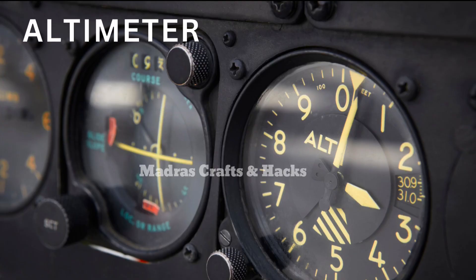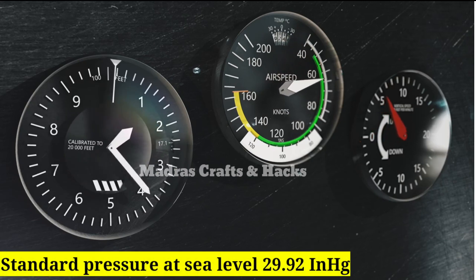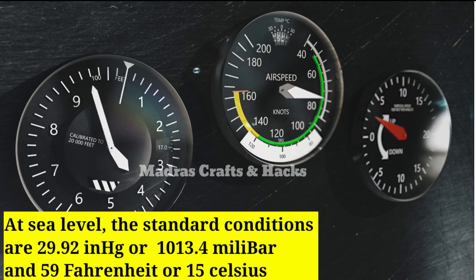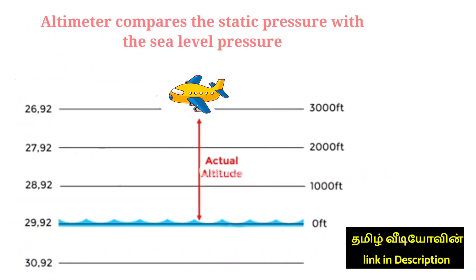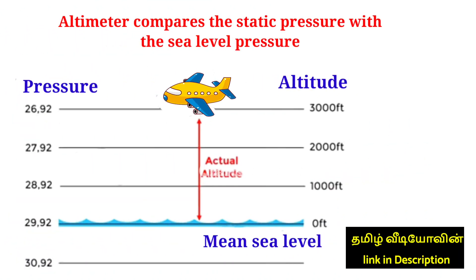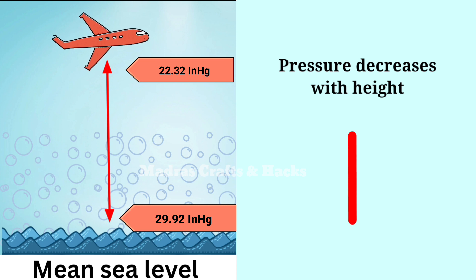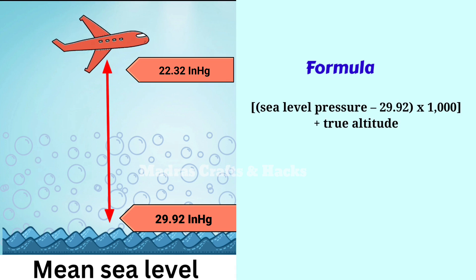The altimeter is calibrated to a reference pressure level of 29.92 inches of mercury, called the barometric reference. At this pressure, the altimeter will indicate an altitude of 0 feet. The altimeter compares the actual static pressure with the sea level pressure. As we know, pressure decreases with height, and the difference in pressure is converted to altitude using a mathematical formula. This is how altitude is measured in an aircraft.